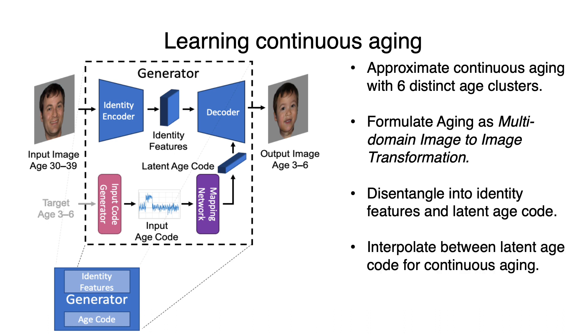We can then achieve continuous aging by interpolating between latent age codes of two adjacent target age classes.